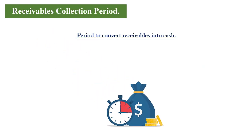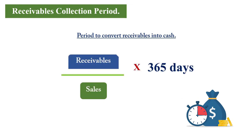The receivables collection period looks at how long it takes for the business to retrieve cash from those sold to on credit, since this cash is needed to repurchase inventory or pay suppliers. The formula is: receivables (from the balance sheet) divided by sales, multiplied by 365 days. If the resulting period is lower than a prior period, a competitor's figure, or an industry benchmark, the business is being efficient.